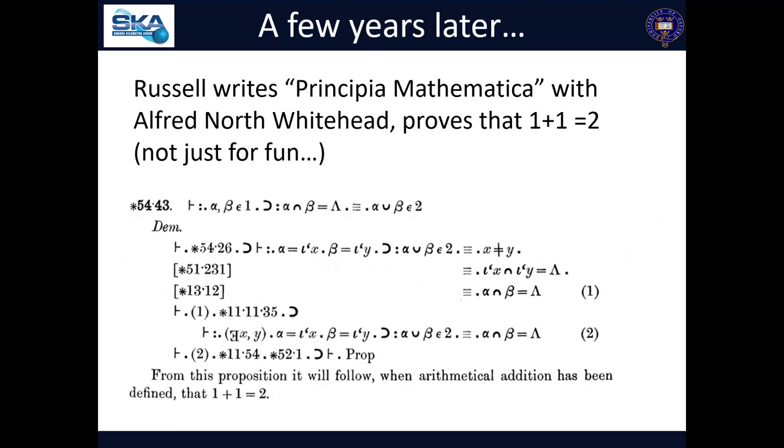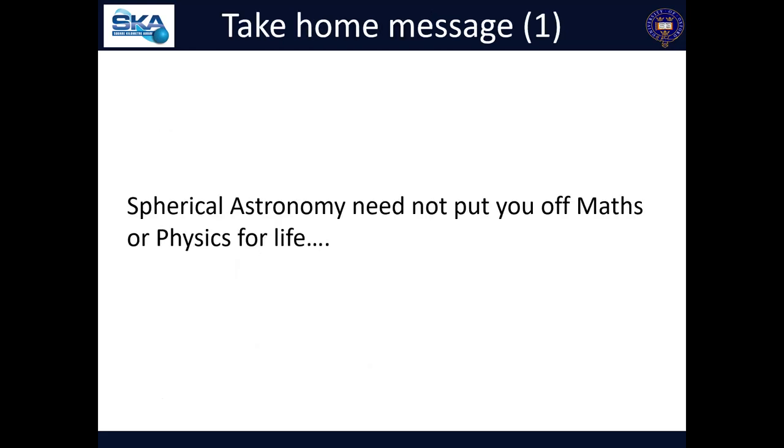But anyway, a few years later, you know, he sticks out at the old mathematics and here he is writing Principia Mathematica, proving that 1 plus 1 equals 2 from a set theoretic foundation. So he didn't put him off entirely, didn't put him off for life for maths and physics entirely there. So don't let spherical astronomy do that. So that's the take home message number one. It's not crazy at all.